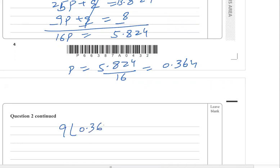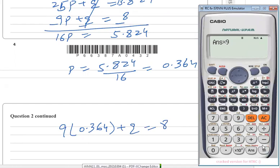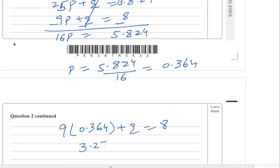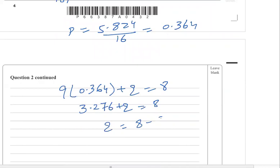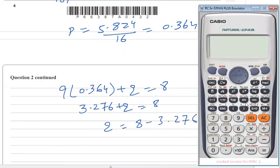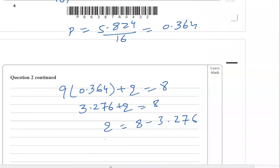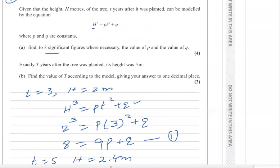9 × 0.364 + q = 8, giving 3.276 + q = 8, so q = 8 − 3.276 = 4.724. Rounding to 3 significant figures, q = 4.72. So the values are p = 0.364 and q = 4.72. Now for part b: exactly t years after planting the height is 5 meters — find the value of t to one decimal place.